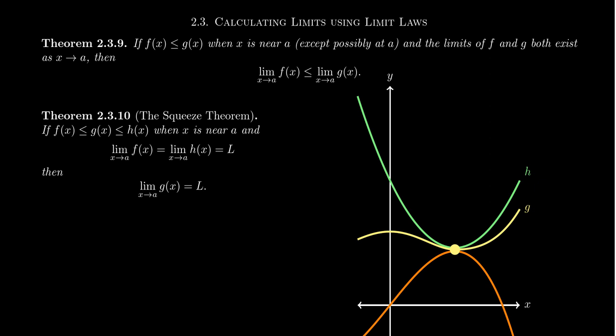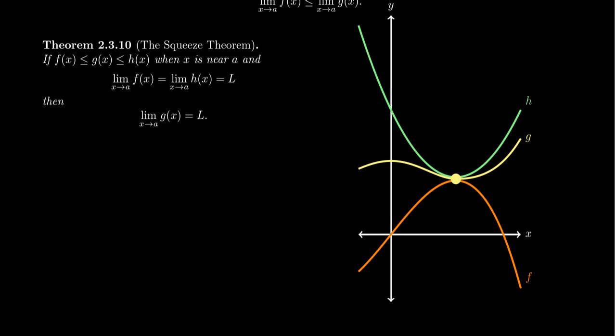Some people call it the Sandwich Theorem — a very illustrative name, though it makes me hungry when I teach. We'll call it the Squeeze Theorem. We have three functions: f(x) ≤ g(x) ≤ h(x) in some neighborhood near x equals a — that is, this inequality must hold for all x near a, although a itself can be excluded, just like the previous theorem. This inequality we'll often refer to as a squeeze: g(x) is squeezed between f(x) and h(x), with g(x) in the middle.